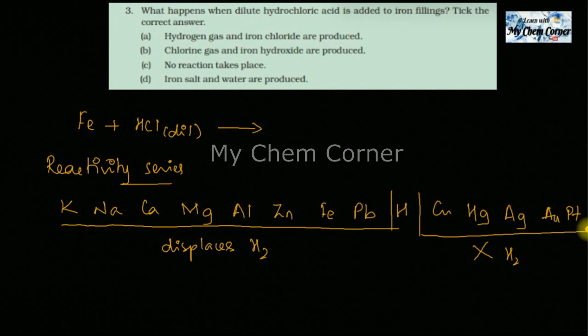This is the reactivity series basic thing. Now, which metal are we looking for? We're looking for iron. Iron is present much before hydrogen, which means it will displace hydrogen from the acid. So here, Fe will react with Cl.